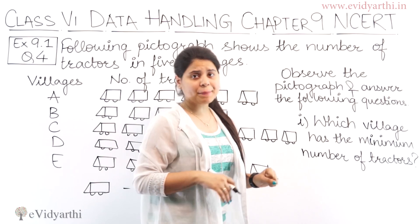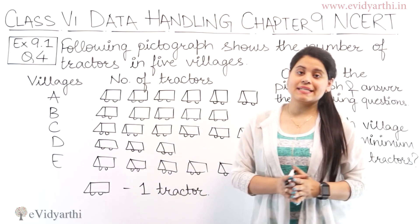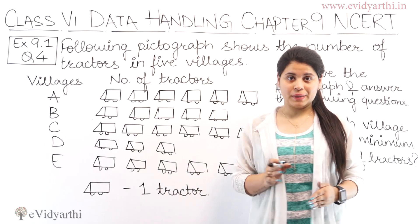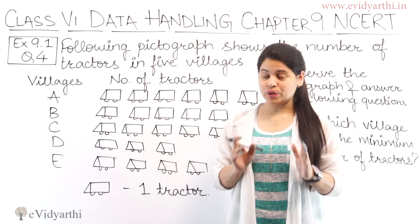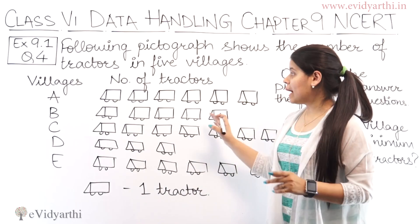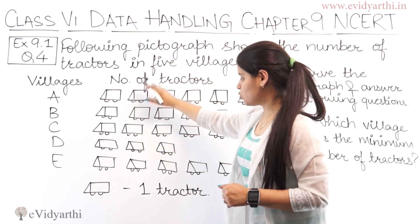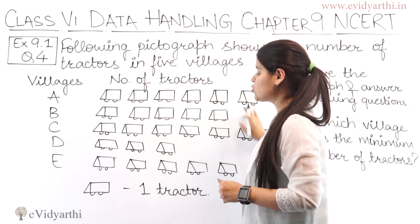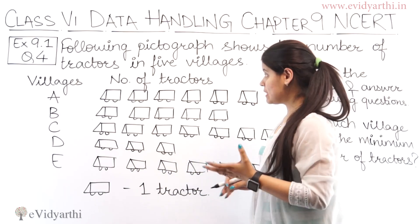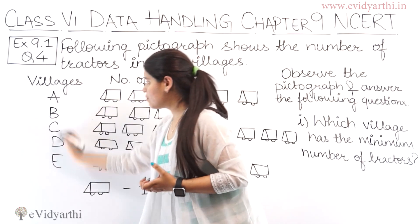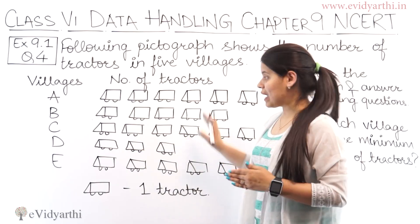Here a word is used: pictograph. What is a pictograph? When we represent some data in pictures, we call it a pictograph. So here you have a pictograph about the number of tractors — in pictures, we represent the number of tractors in different villages, and how many tractors are in each village.